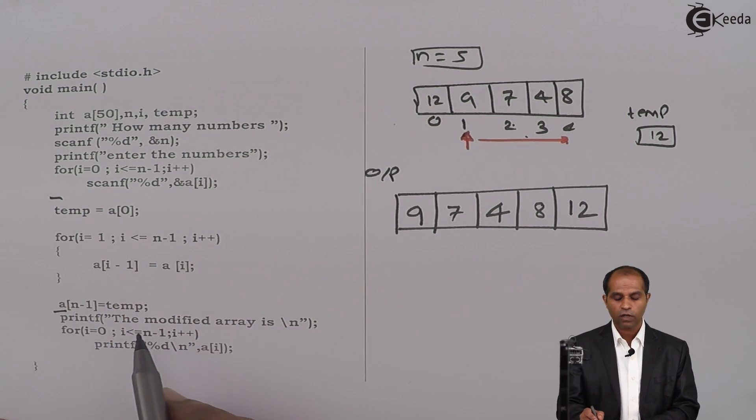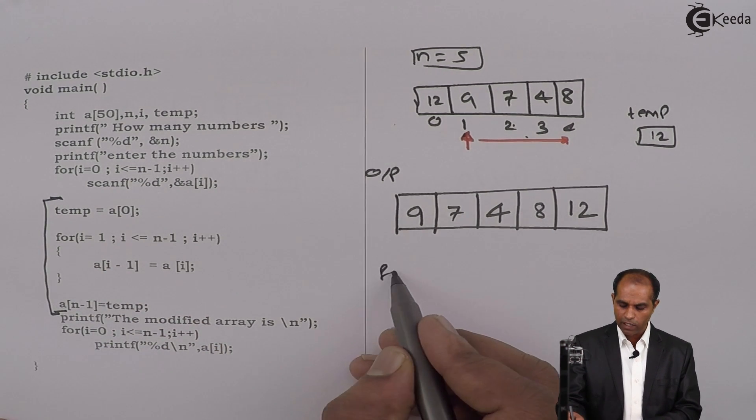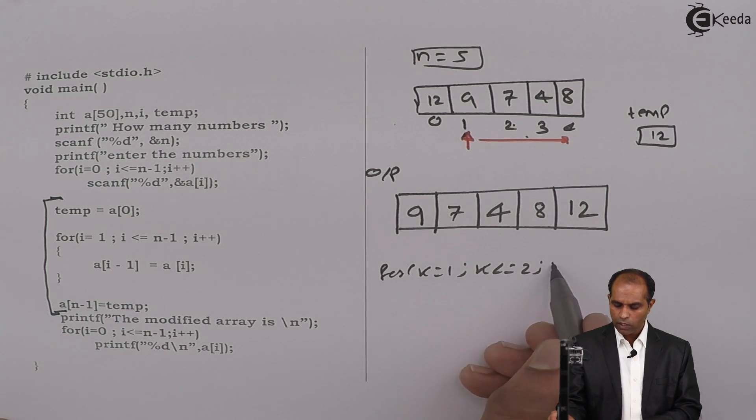So here we are going to shift the elements of an array by multiple times. If I say that I am supposed to do it for say shift to 2 times, then this body which I have stated has to be there in a for loop as for say k equals to 1, k less than equals to 2, k plus plus.